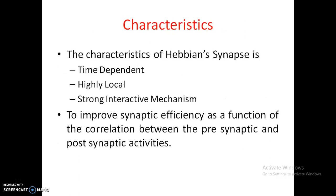What are the main characteristics of the Hebbian synapse? The main characteristics are: time-dependent, highly local, strong interactive mechanism, and it has a conjunctional or correlational mechanism. These characteristics improve the synaptic efficiency as a function of correlation between the presynaptic and postsynaptic activities.